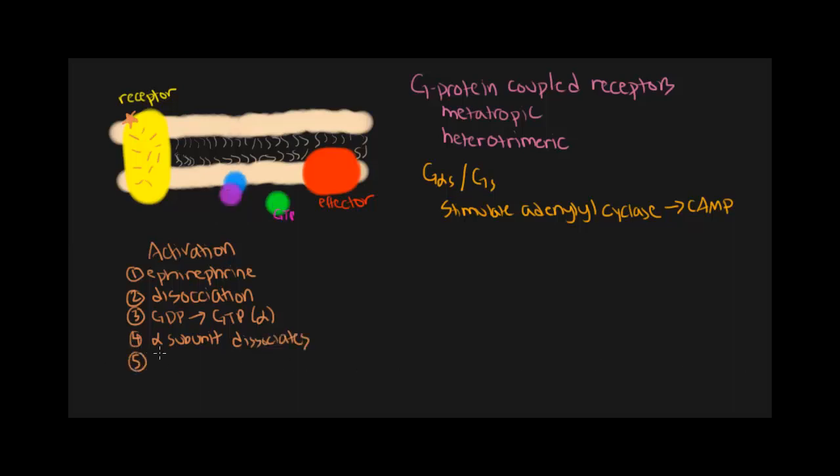Next, the alpha subunit will bind to adenylyl cyclase. Now, if you'll note above, there is an effector protein involved in this mechanism. And in this case, our effector protein is adenylyl cyclase.